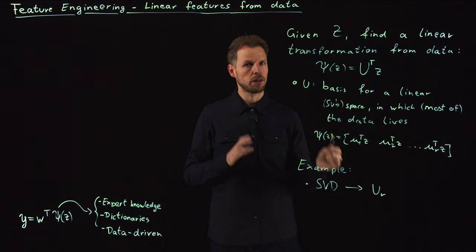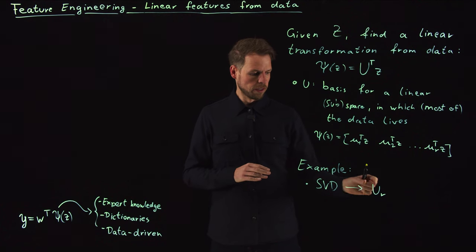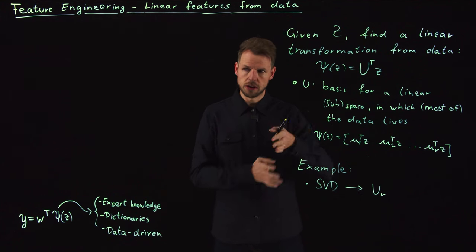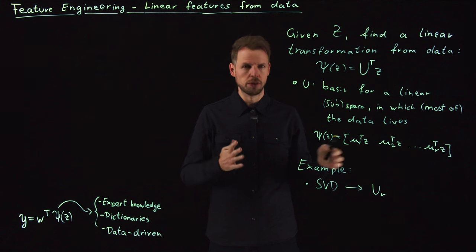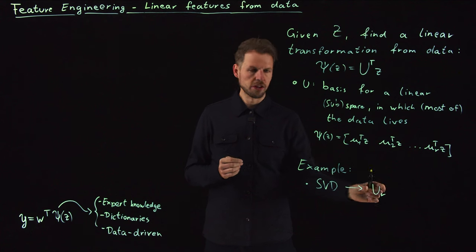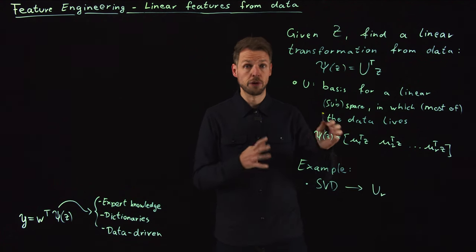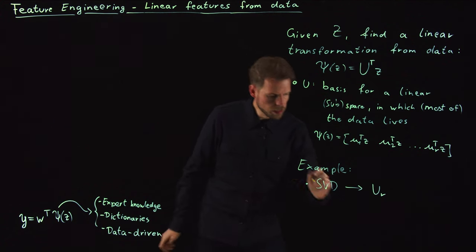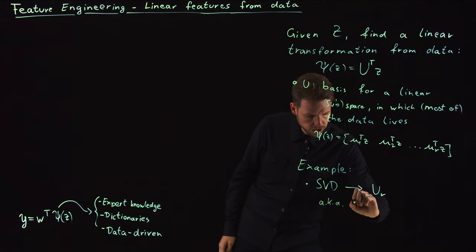The U's contain the left singular vectors and these form an orthonormal basis of dimension r. What we also found, you can check out the SVD video once more if you're uncertain, was that the leading vectors span the most important features because they contain the maximum variance or information in terms of an r-dimensional basis. So it's the optimal basis in dimension r for a given data set.